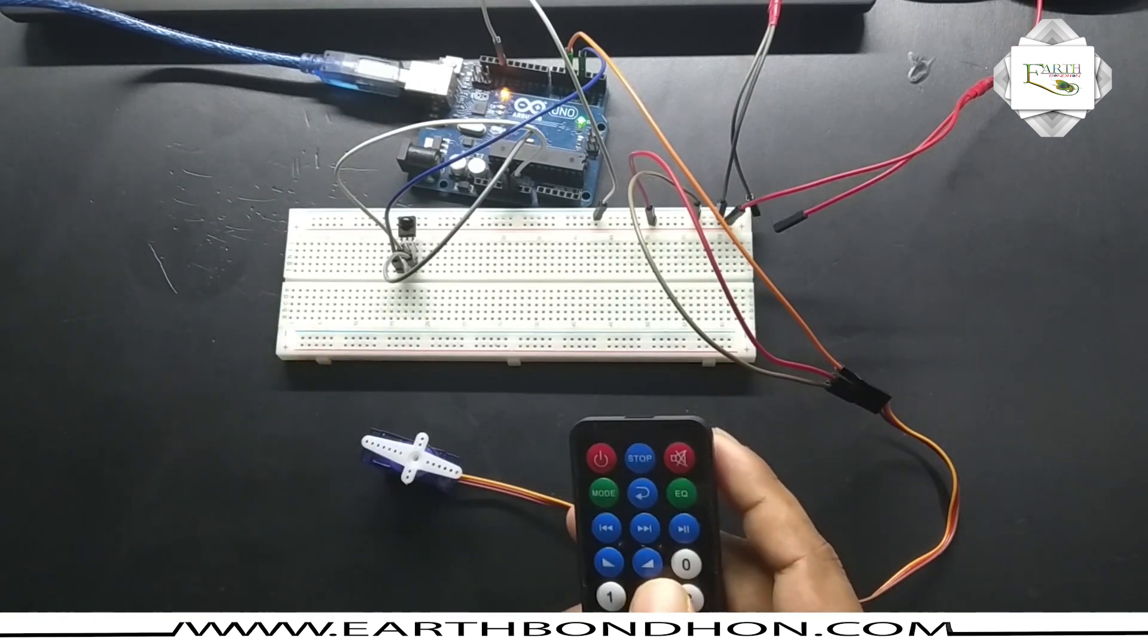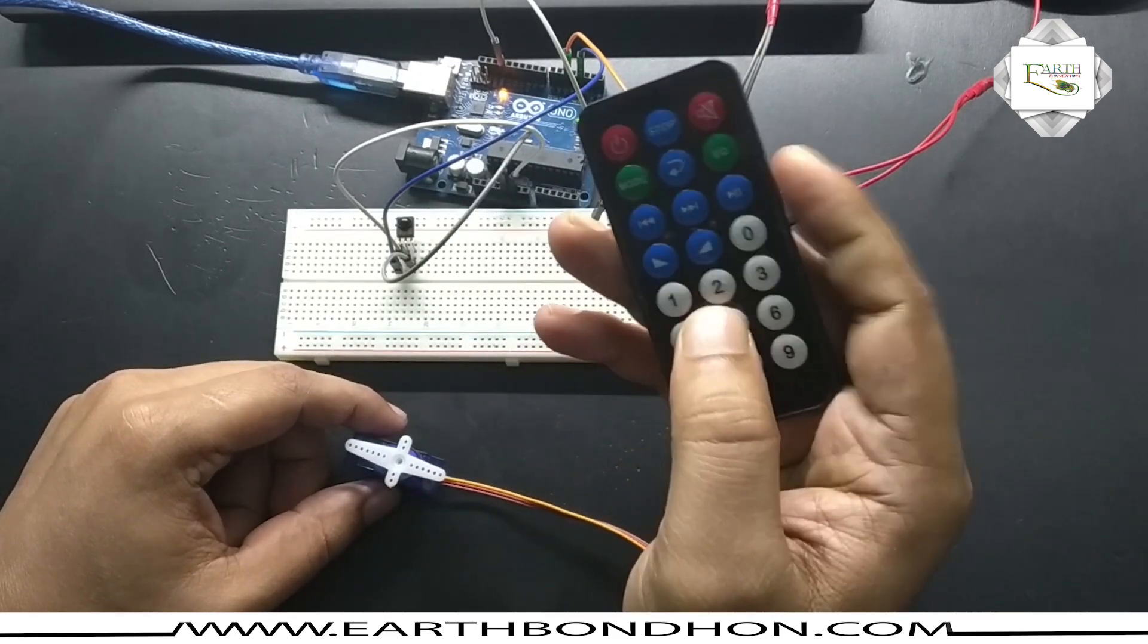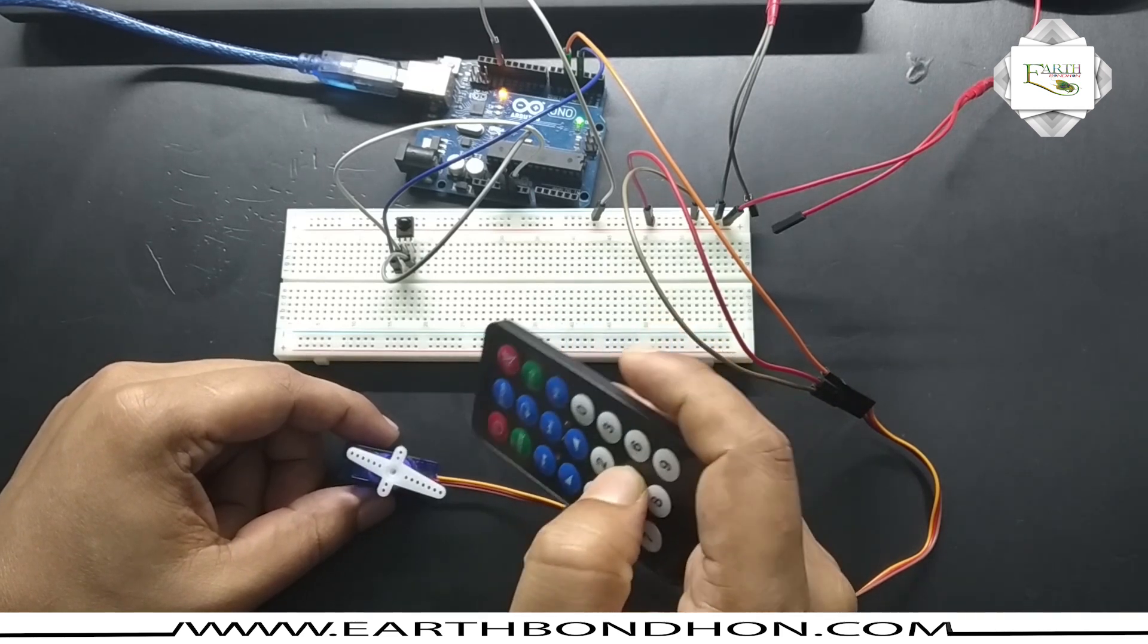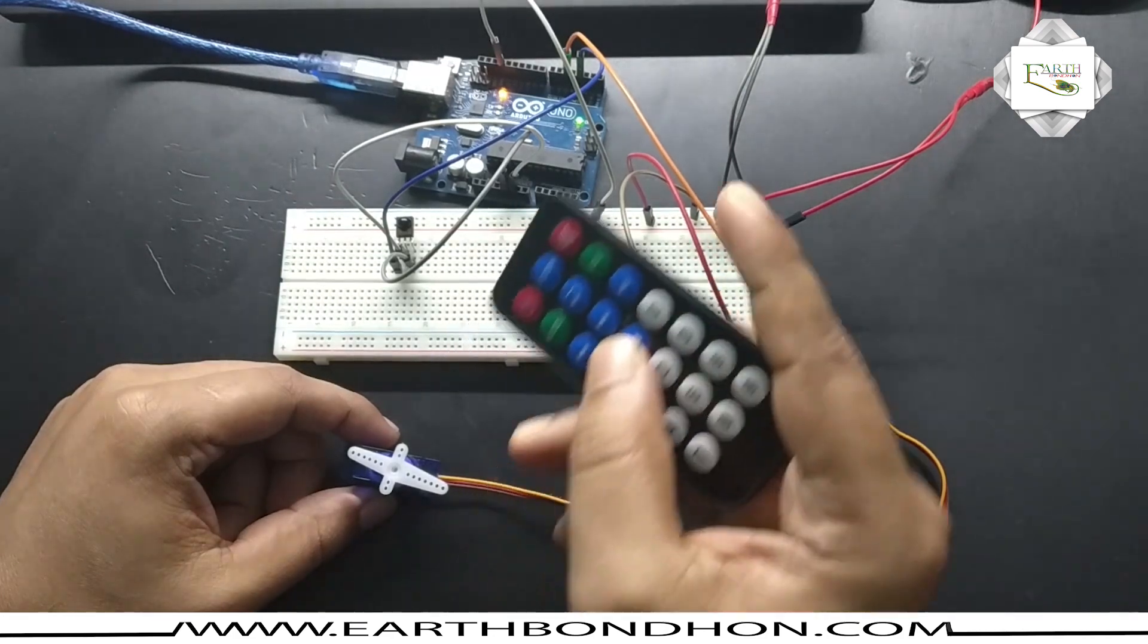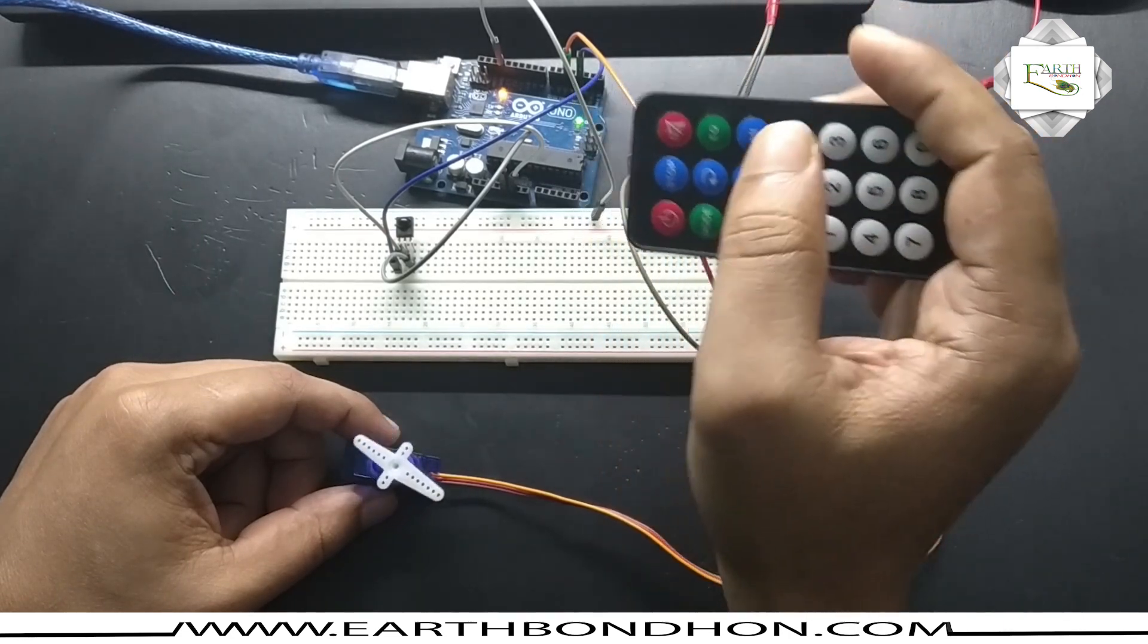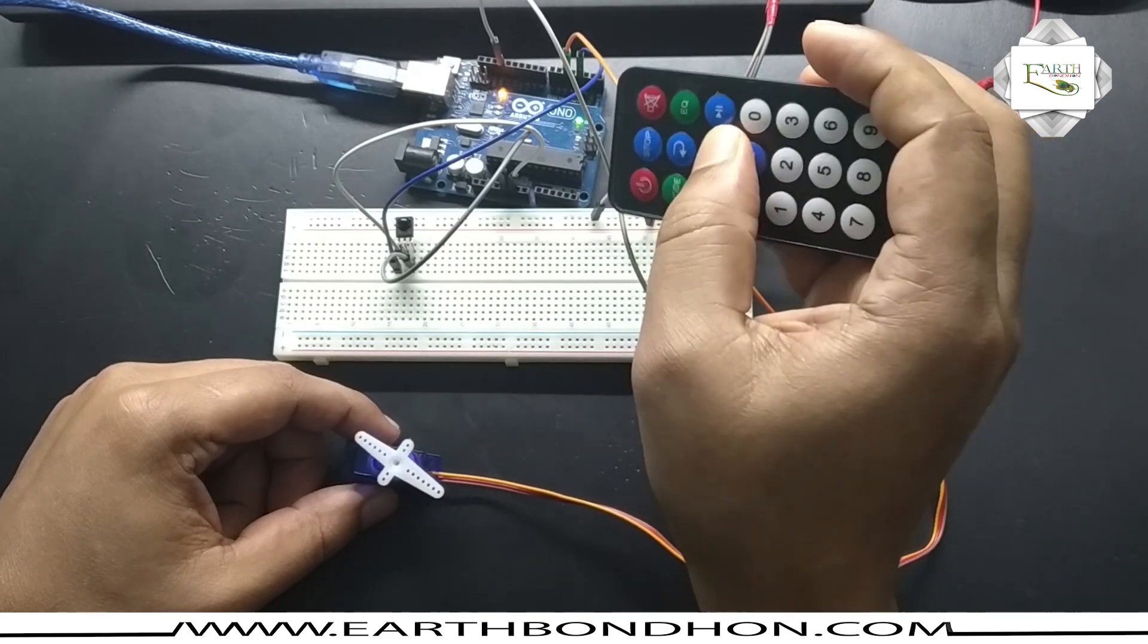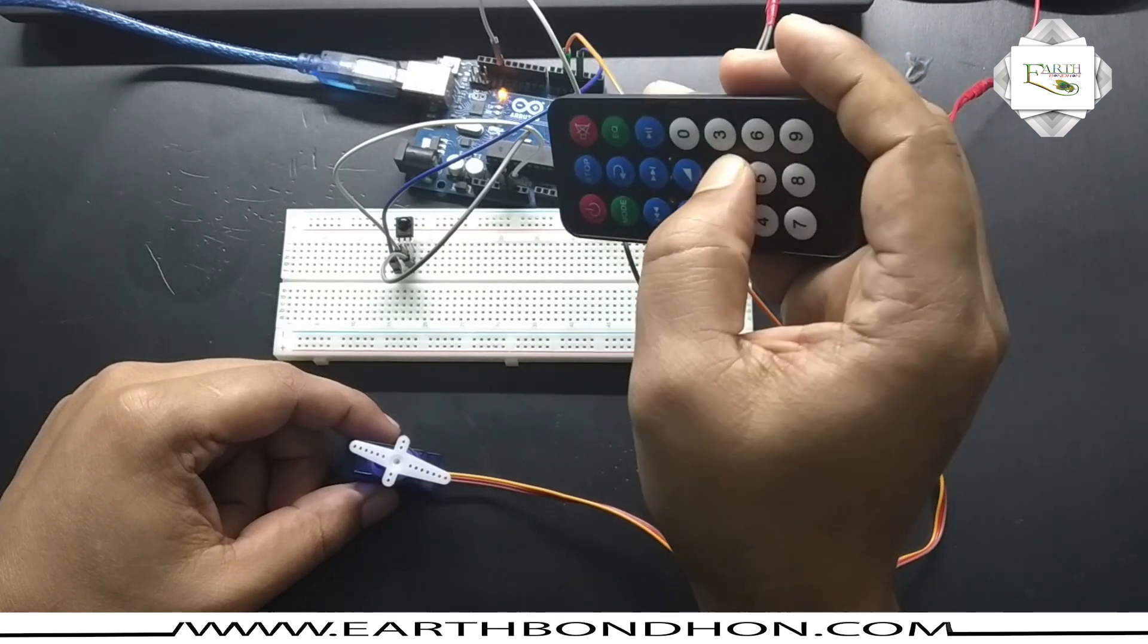First, I'll change the angle with variable control. Button number two on the remote is set to 30 degrees. Press two for 30 degrees. Press five for zero degrees, back to zero. This button moves it back to run. With these push buttons, I can control any angle. See, it's 45 degrees. Five is zero degrees, two is 30 degrees.